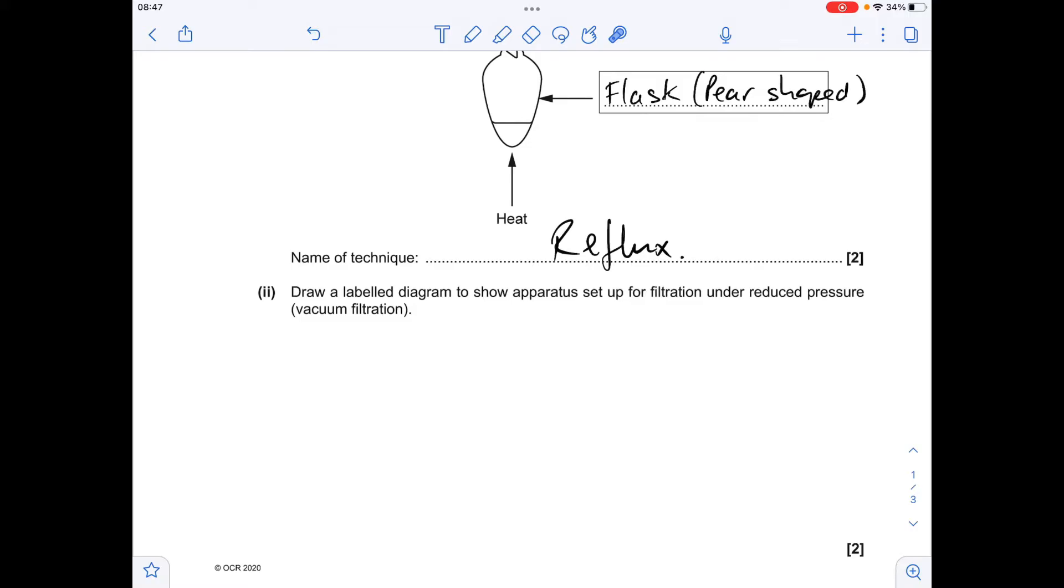Next, draw a labeled diagram for the filtration apparatus for reduced pressure or vacuum filtration. We're going to be drawing Buchner apparatus.